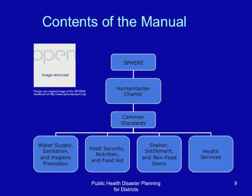These are the contents of the SPHERE manual. It begins with the humanitarian charter and shows the common standards — that is, standards common to all disasters. In our setting, we have adjusted this to mean standards for response management.